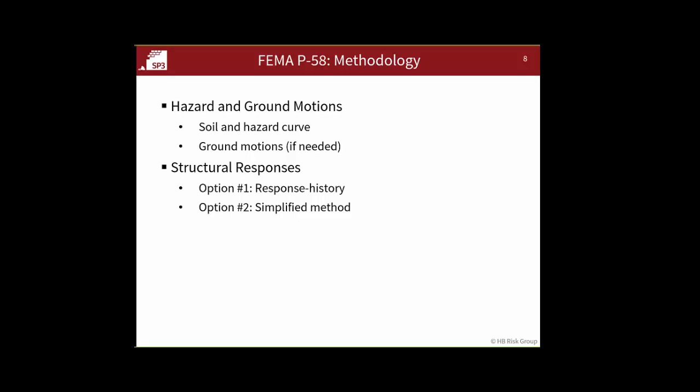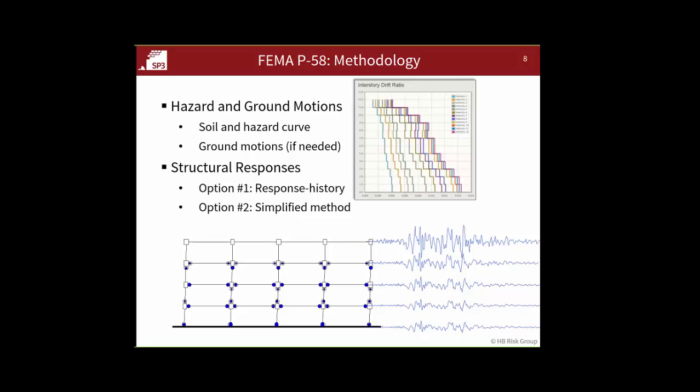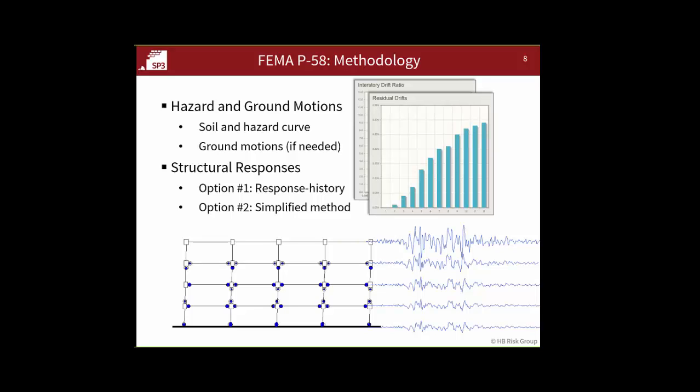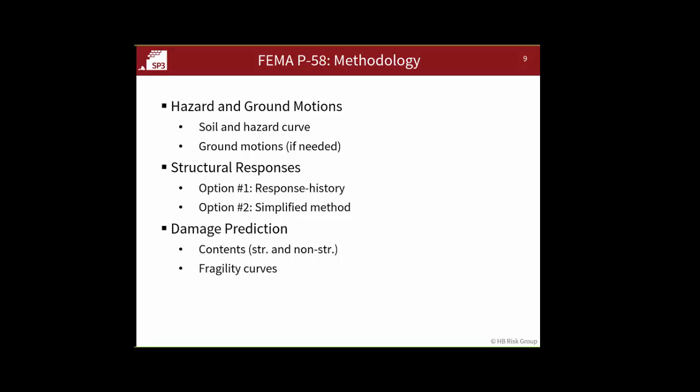We're actively developing methods to make the simplified method apply to taller buildings by using a modal analysis approach. In terms of the structural response step, the primary three parameters we're looking at are interstory drift ratio, residual drifts, and peak floor accelerations. If you're looking at a shear wall building, you'll also be looking at chord rotations and coupling beam rotations, but these three are the basic ones always used.